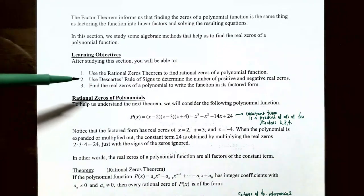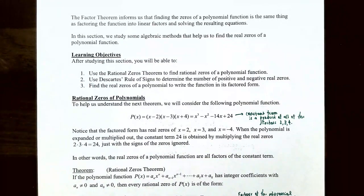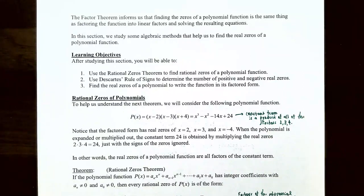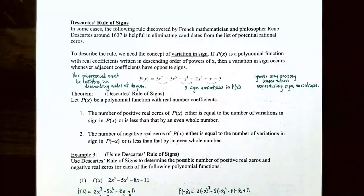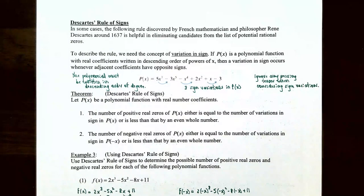In this video we're going to use what's called Descartes' Rule of Signs to determine the number of positive and negative real zeros of a polynomial function, and also to find the real zeros to write the function in its factored form. This rule, discovered by French mathematician and philosopher René Descartes in 1637, is helpful to eliminate some of the candidates from the potential rational zeros from the rational zeros theorem.